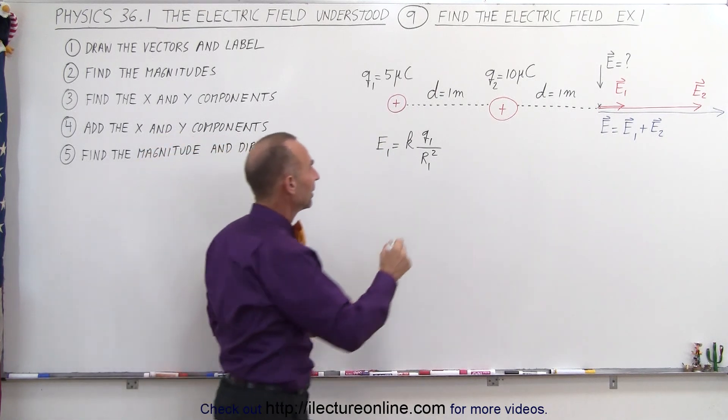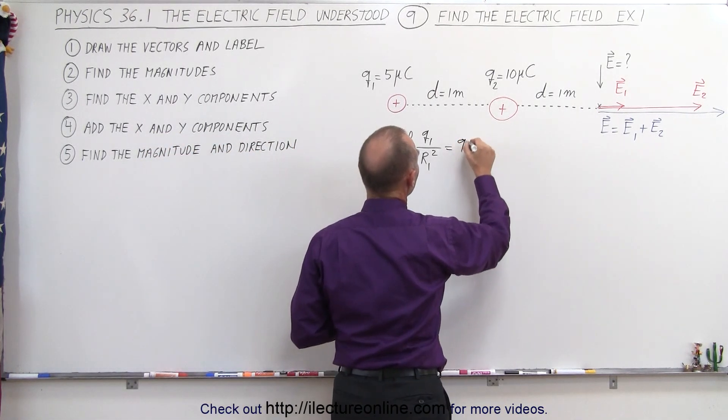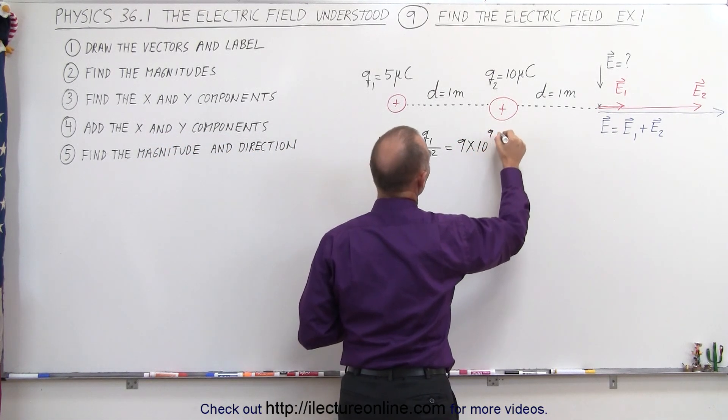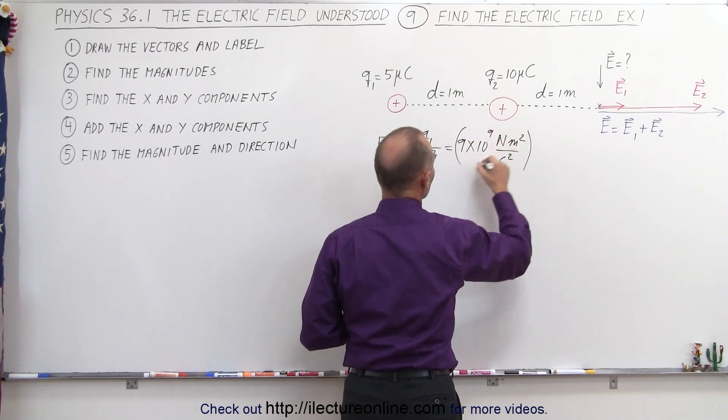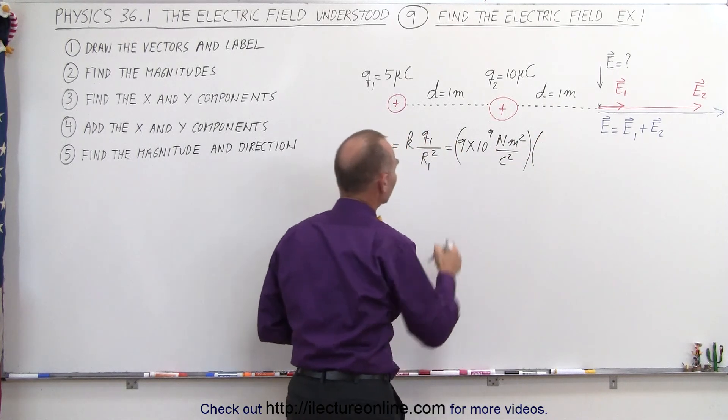So in this case k, that would be equal to 9 times 10 to the 9th newton meters squared per coulomb squared. We'll put the units here so you can see how the units cancel out.